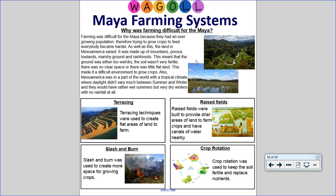I've done a brief explanation with a picture of each technique. You can draw these out beautifully, or find a picture and print it to stick in your book. Terracing techniques were used to create flat areas of land to farm. Raised fields were built to provide drier areas of land to farm crops with canals of water nearby. Slash and burn was used to create more space for growing crops. Crop rotation was used to keep the soil fertile and replace nutrients. If you're pushing for gold - which I think a lot of you can do - just add more detail in each of these four areas, like the area of Mesoamerica where you'd find these farming systems. Try and complete your A4 page again, just like last week - beautiful full sentences, detailed, and add some pictures for visual representation.